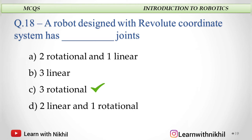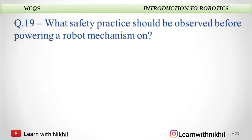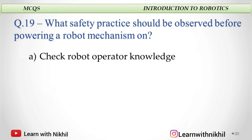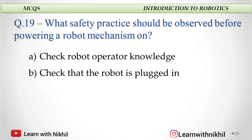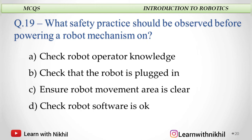You have to remember all this — any question can be asked. What safety practice should be observed before powering a robot mechanism on? A. Check robot operator knowledge, B. Check that the robot is plugged in, C. Ensure robot movement area is clear, or D. Check robot software is okay. The answer is: ensure that the robot movement area is clear.